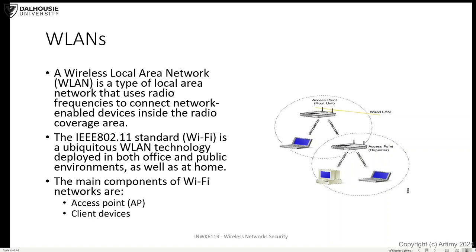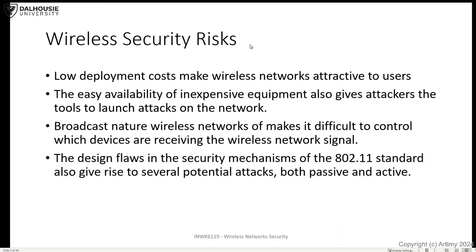When you look at wireless networks, one thing you notice from the beginning is that they have a higher risk of intrusion than wired networks, because we don't really control the propagation of the electromagnetic signal the same way we control access to a wired network. Wireless networks are dominant partly because of low deployment cost compared to wired networks. The components are relatively inexpensive — both from the organization's point of view and from the attacker's point of view, making it easy to use inexpensive components to attack the network.